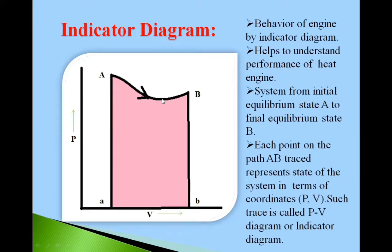This AB is the path. This A is initial position, initial equilibrium state of a system. B is final equilibrium state of the system.